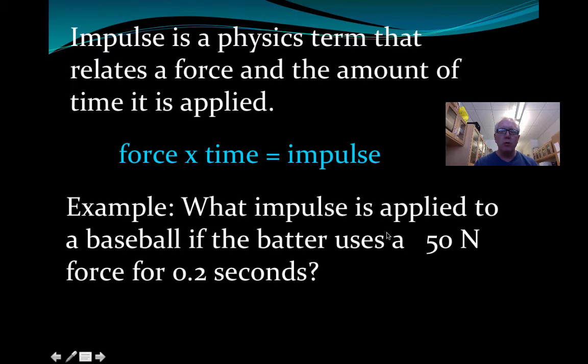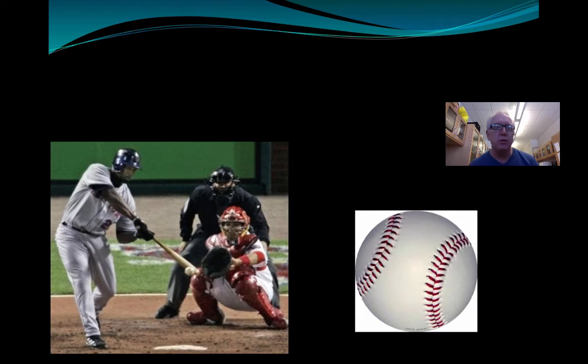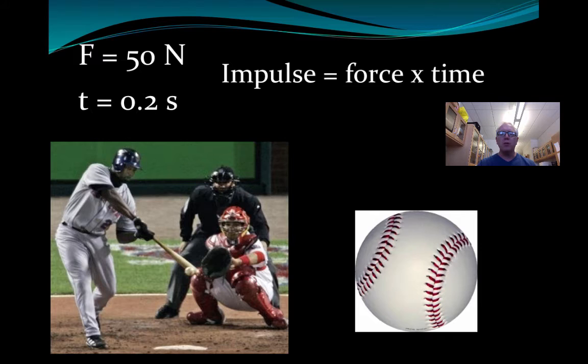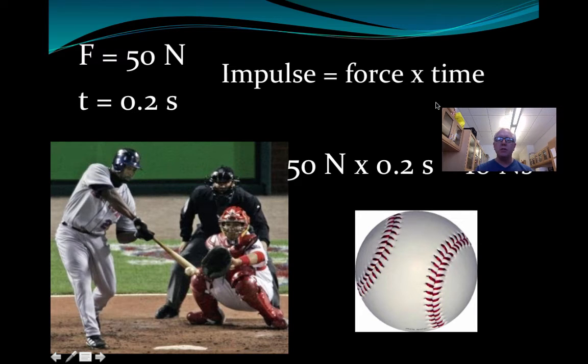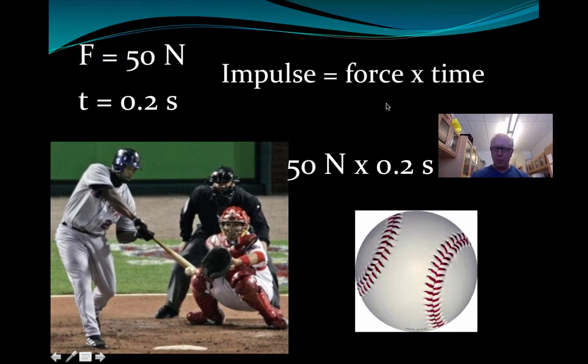So here's an example. What impulse is applied to a baseball if there's a 50 Newton force and the time is 0.2 seconds? Well, what do we do for all of our problems? We identify the information. Here's a baseball and here's a baseball player. It's a former New York Met, Carlos Delgado. For any of you Met fans out there, that was a few years ago. Identifying the information: the force we were told was 50 Newtons, and the time it was applied for was 0.2 seconds. So impulse is force multiplied by time. We take our force multiplied by the time, and 10 Newton seconds is going to be the unit there.